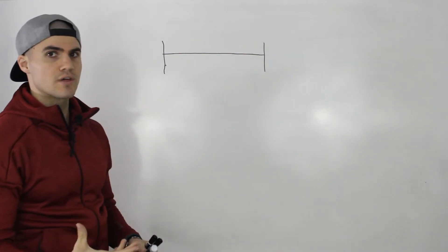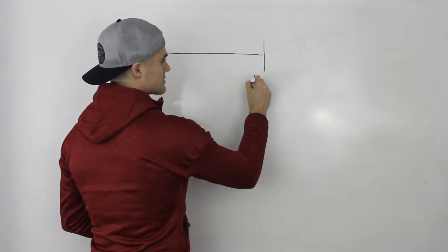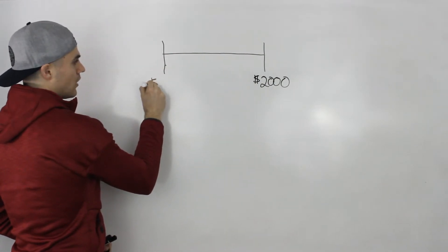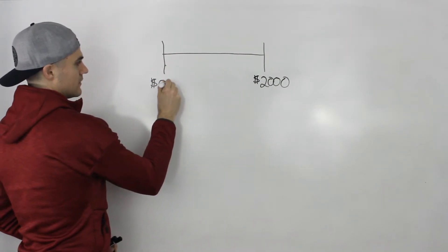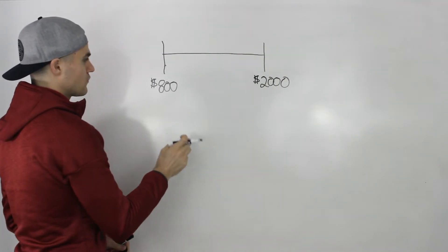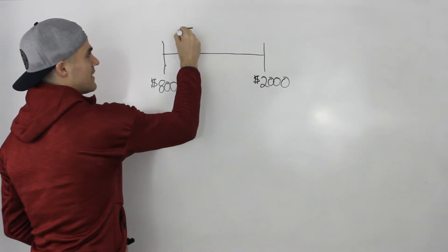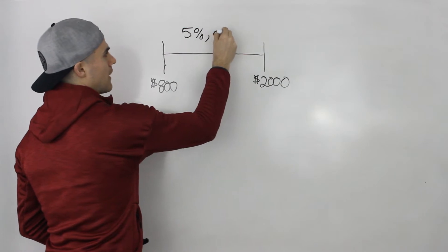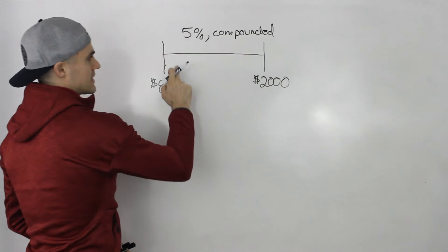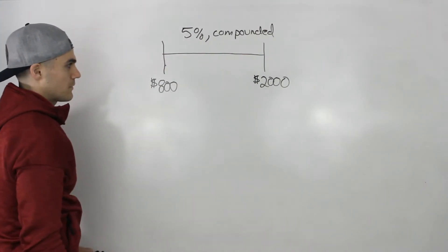This question says that you need $2,000 to buy a new stereo. You have $800 to invest today, and they ask how long it's going to take for the $800 to grow to $2,000 if you're investing at 5% compounded annually — so how many years will it take?